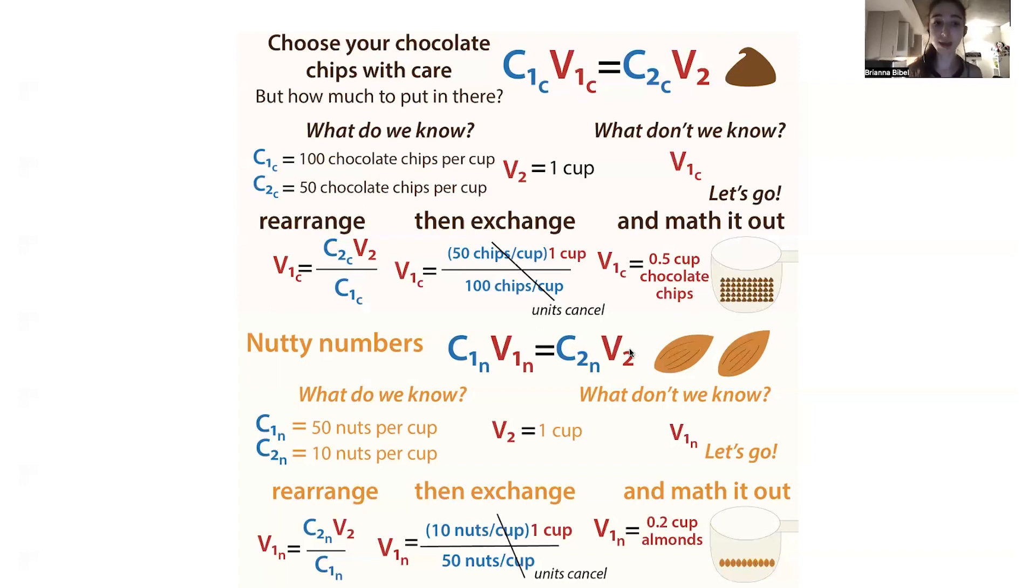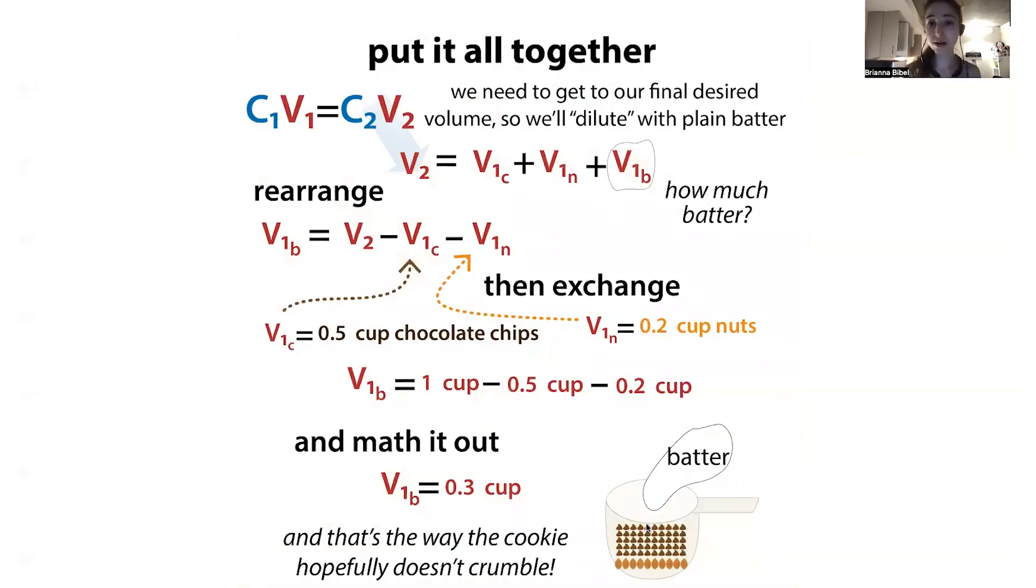Now what about our nuts? We can do the exact same thing. Instead of C1C, we have C1N because now we're talking in terms of nuts. We do the exact same type of thing, and in this case we get 0.2 cups of almonds. So we put it all together. We need to now add our batter to volume. Our final volume is going to be made up of the initial volume from the chocolate chips and the initial volume from the nuts plus the initial volume of the batter. We can now solve for this initial volume of the batter. We take that V2, we know our V2 is going to be a cup, and we subtract the half cup of chocolate chips and 0.2 cups of nuts. We see that we need to add 0.3 cups of our plain batter, and that's the way the cookie hopefully doesn't crumble.